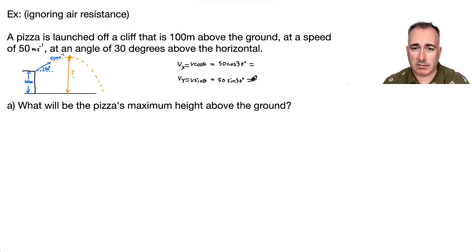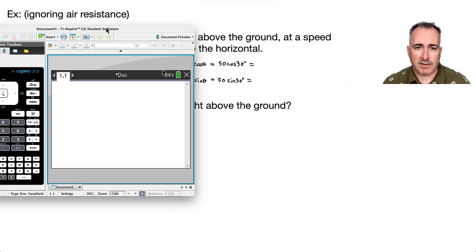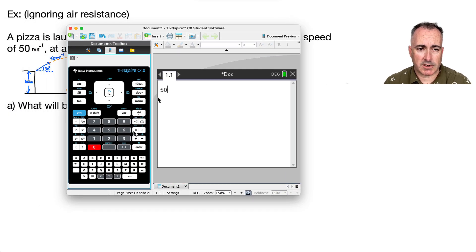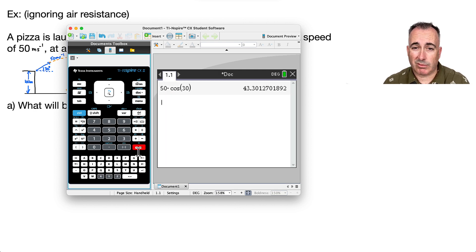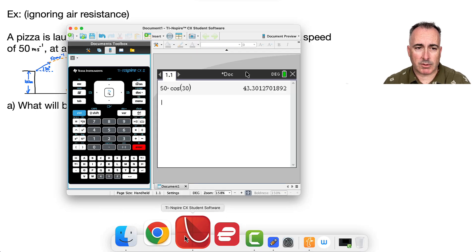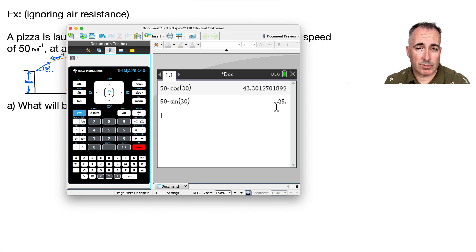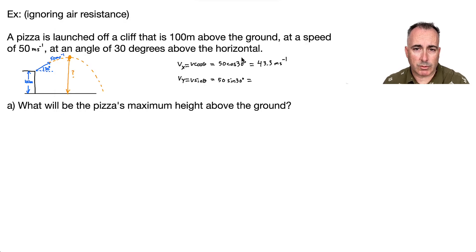Let me open my calculator. Make sure I'm in degree mode. I want 50 times cosine of 30 degrees — I press enter and get 43.3 roughly. So Vx = 43.3. Then 50 times sine of 30 degrees gives me exactly 25, because sine of 30 is one half. So Vy = 25.